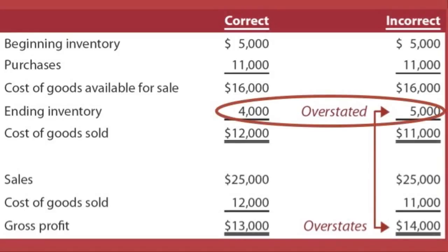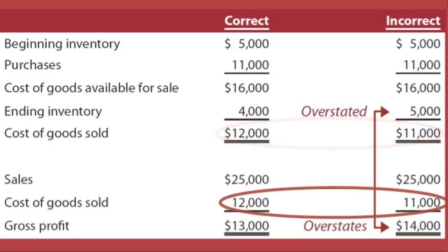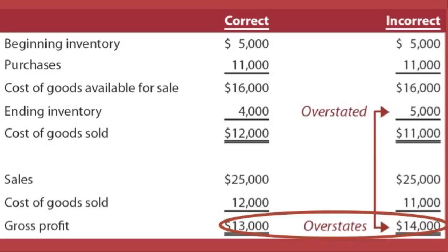Let's look at an example. We have ending inventory where the correct amount on the left is shown to be $4,000, but for whatever reason a mistake was made and it was counted or valued at $5,000. By overstating ending inventory, notice that causes an understatement of cost of goods sold. The $16,000 goods available for sale minus the incorrect $5,000 gives you $11,000 of cost of goods sold. Sales minus the understated cost of goods sold triggered the overstatement in gross profit. So again, the general rule: overstating ending inventory overstates income.